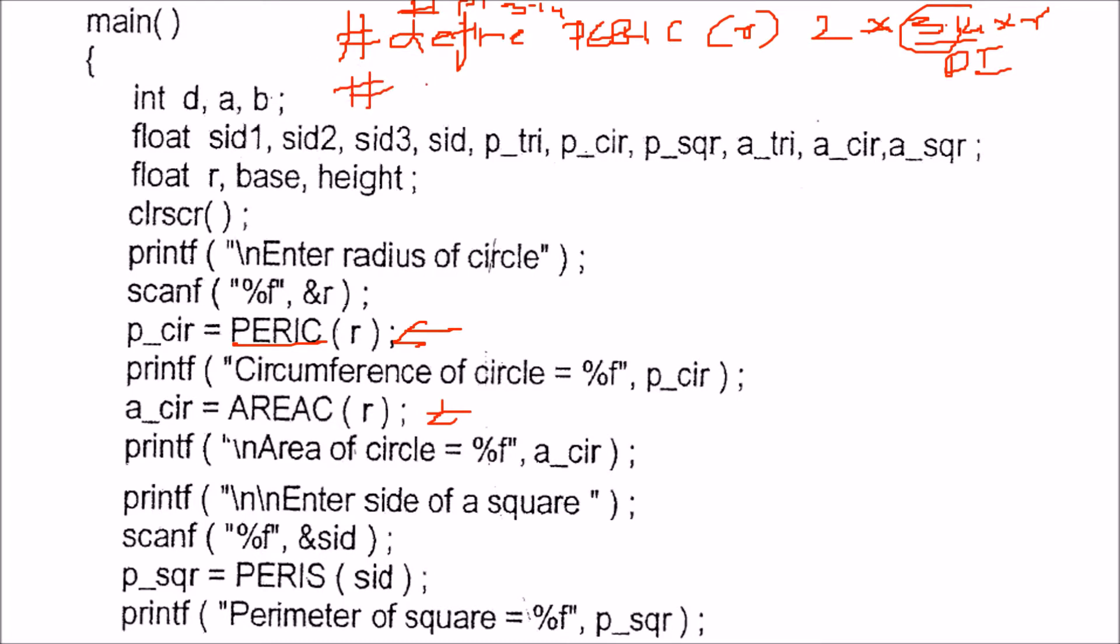Second line will be for circle. It will be because I want to find out the area, areac. So I will define hash define, this will be AREAC. Again I pass r and this is pi r squared. So it will be pi into r into r. This is how we ask for the radius, pass here and find out the perimeter of circle printed and then area of circle printed.